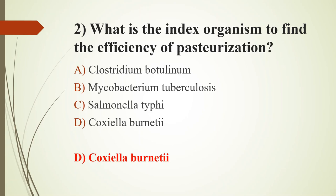Pasteurization is the process of partial sterilization of a product such as milk or wine to make it safe for consumption and improve its keeping quality. Two types of pasteurization methods: batch pasteurizer — 63°C for 30 minutes; and continuous flow pasteurizer — 72°C for 15 seconds in a heat exchanger. Initially, pasteurization conditions were set at 61°C for 30 minutes with reference to Mycobacterium tuberculosis, but later changed to 62.8°C for 30 minutes or 71.6°C for 15 seconds, with reference to Coxiella burnetti.